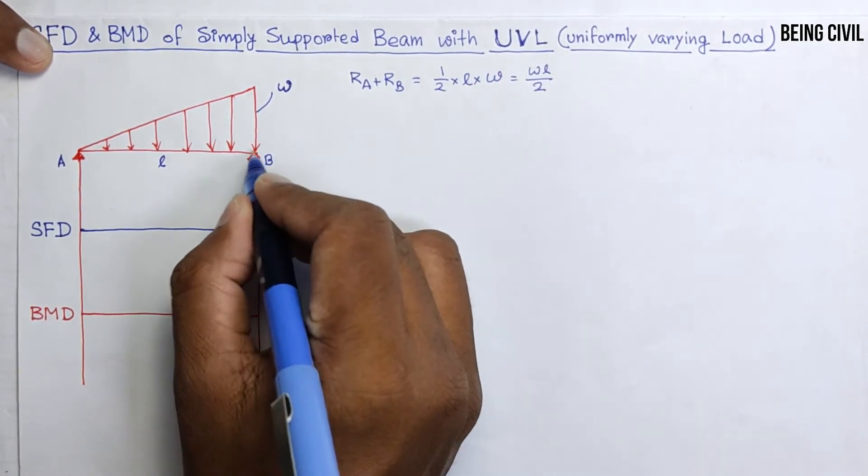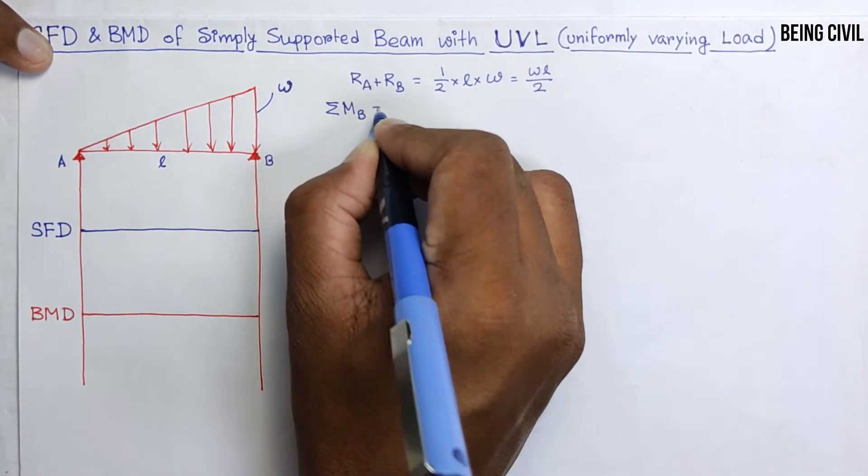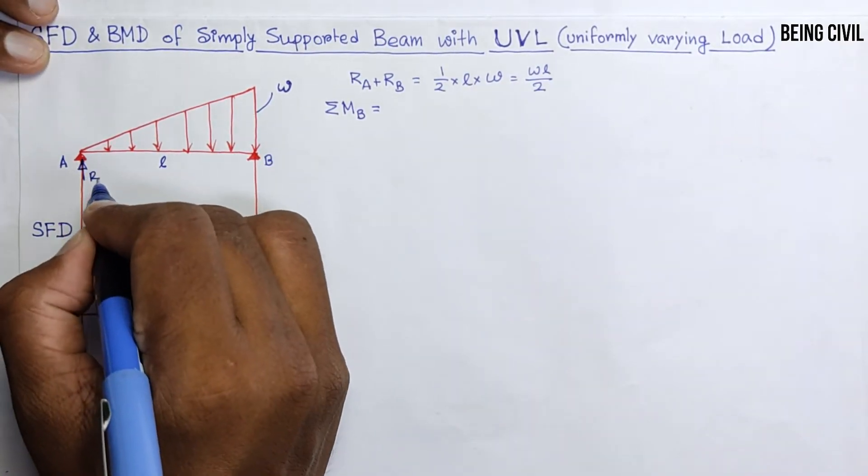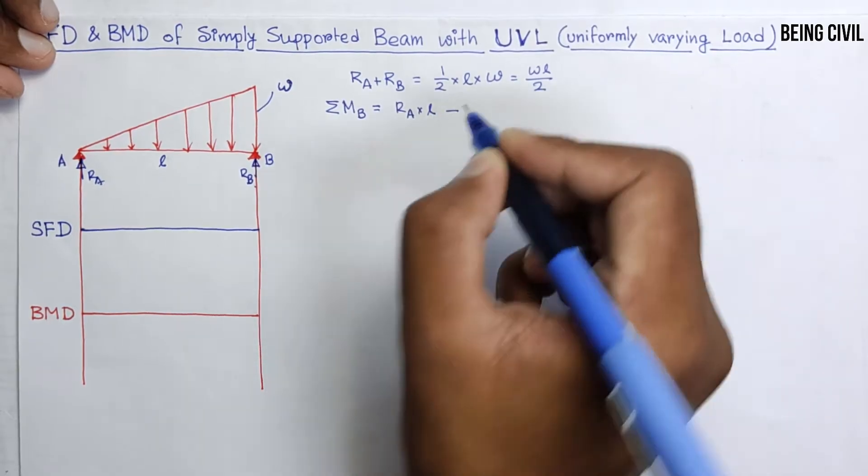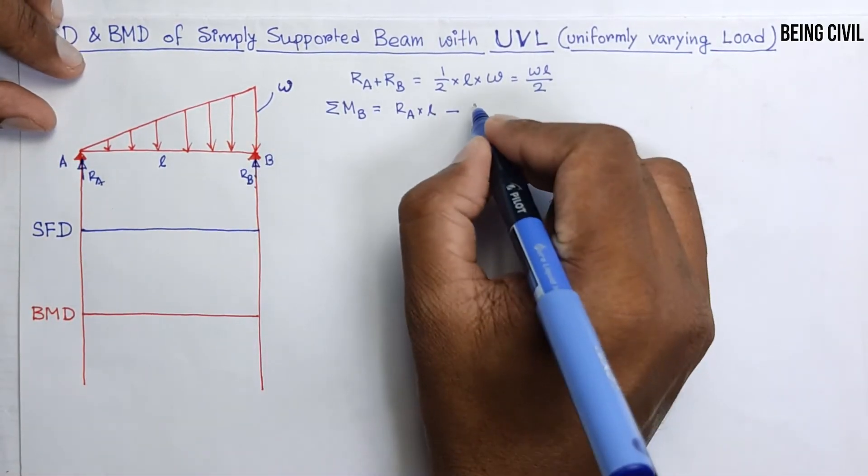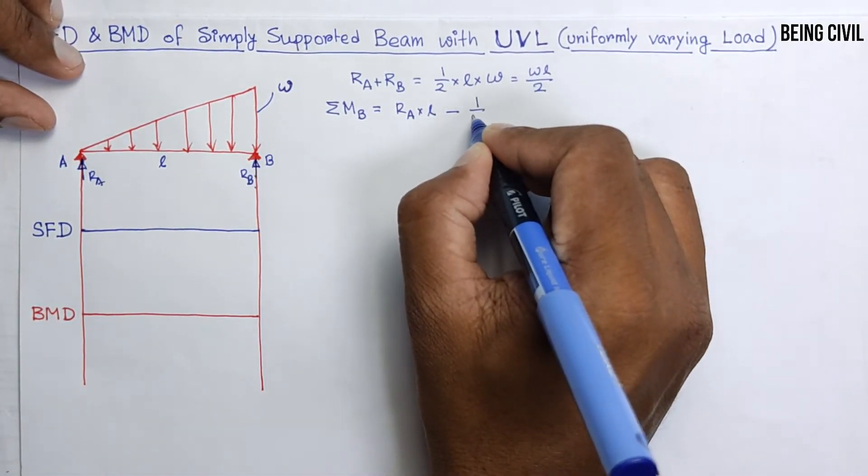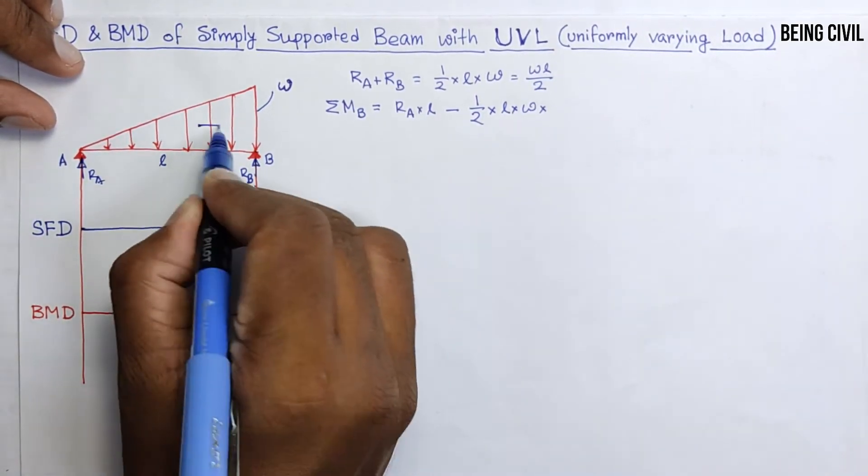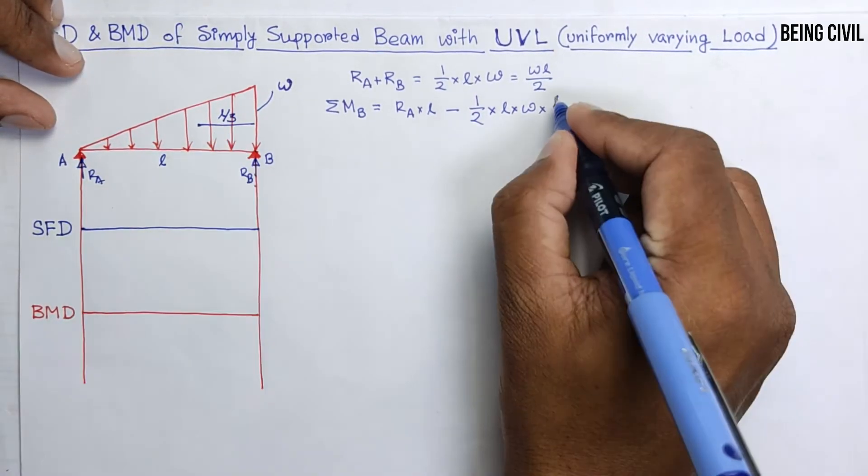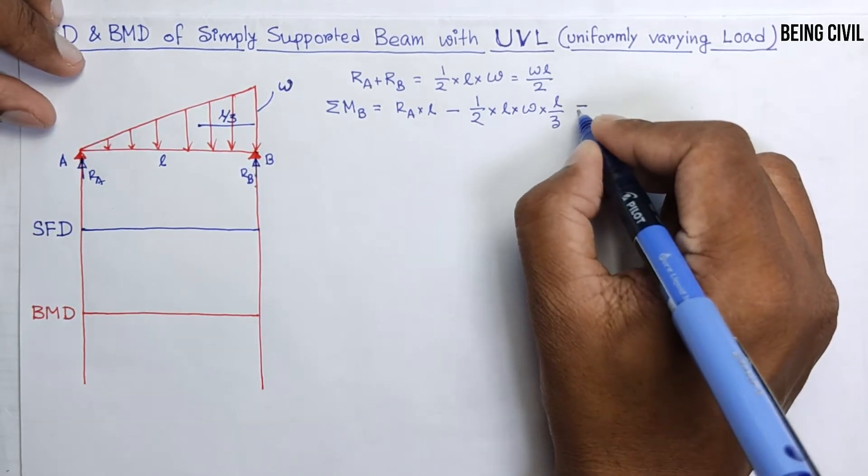Let us take moment about point B. Summation of moment MB equals RA into total length L minus moment for this loading, so area of this triangle times the CG distance from this point, L by 3, and equate this to 0.